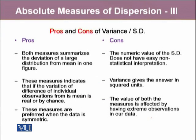There are a few pros and cons of the variance and standard deviation. These both measures summarize the deviation of large distribution from mean in one figure. These measures indicate that if the variation of difference of individual observations from its mean is real or by chance. These measures are preferred when the data is symmetric. Its demerits include that the numeric value of the standard deviation does not have easy non-statistical interpretation.